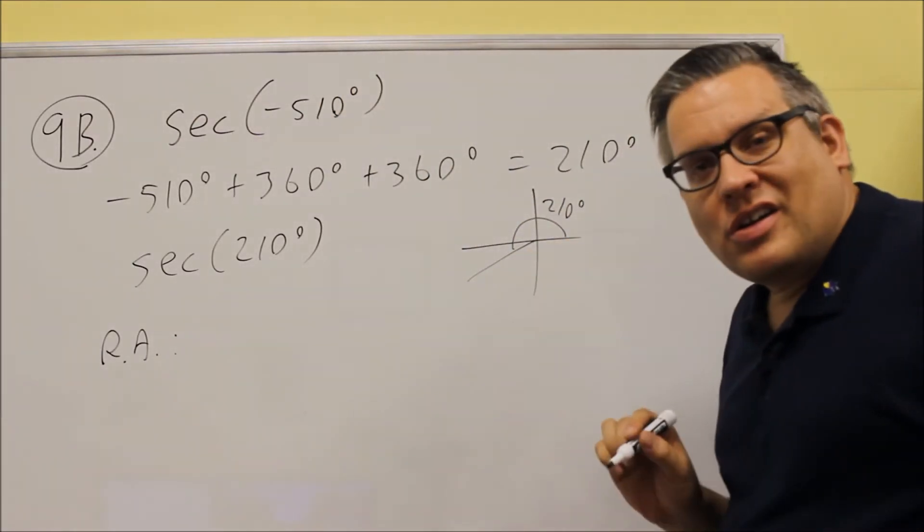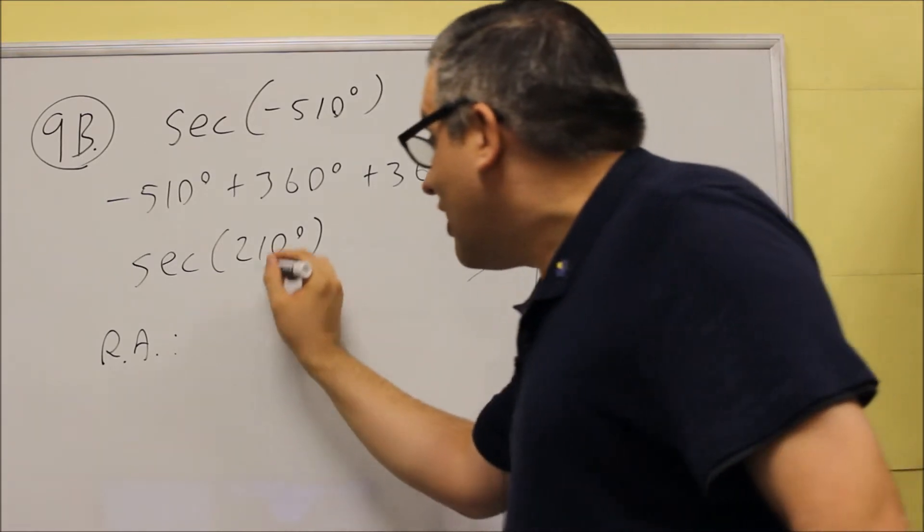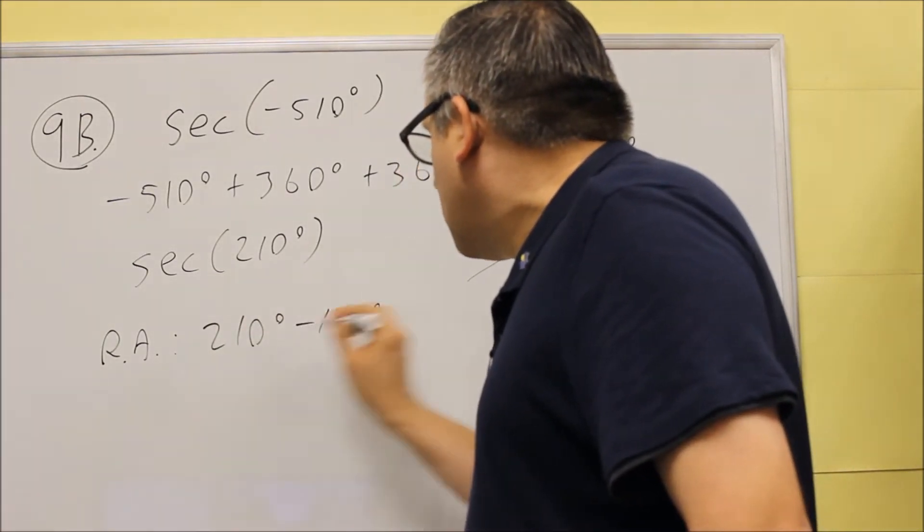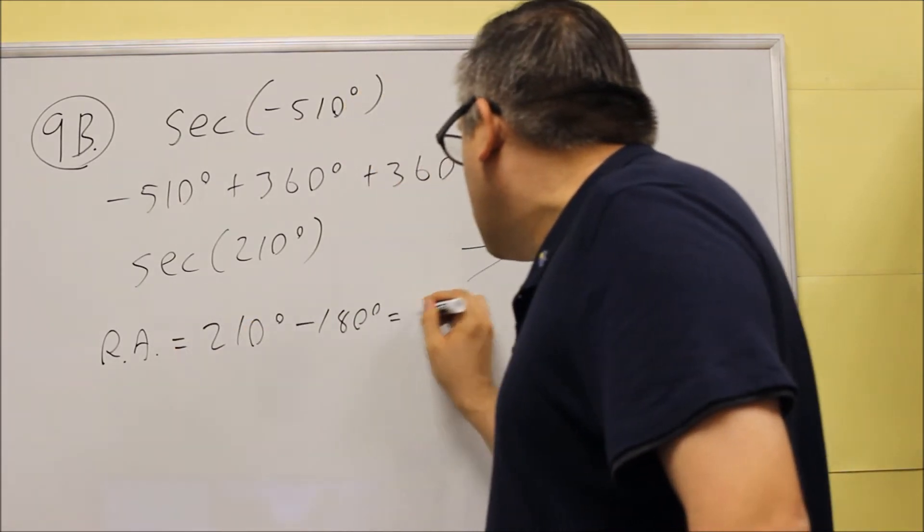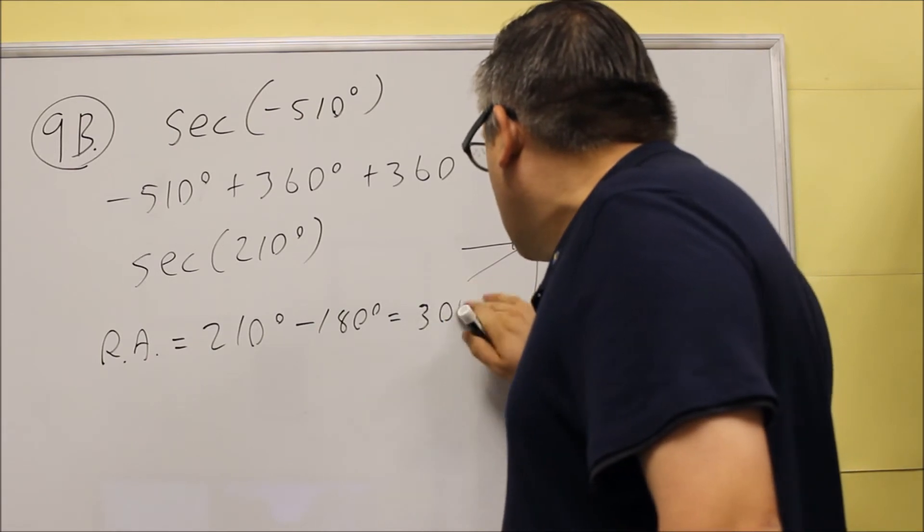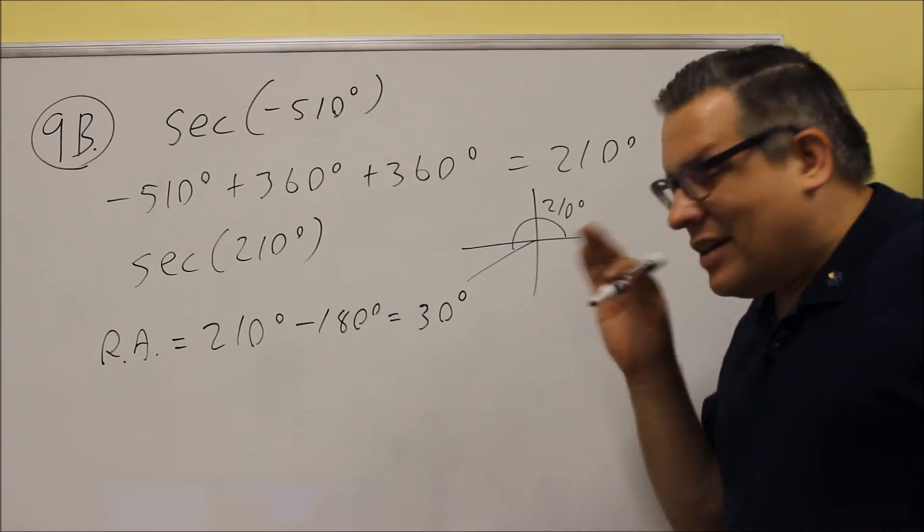So my theta is 210 degrees, and we're going to subtract 180. So reference angle is going to be equal to 30 degrees. So 30 degrees will be the reference angle.